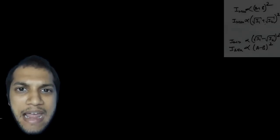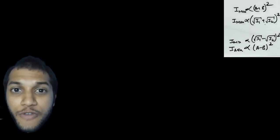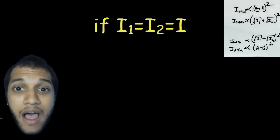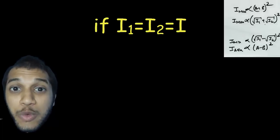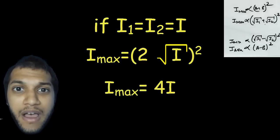There's something that we saw in the previous section that doesn't add up. What we saw is that if you have two sources of equal intensities, say I, and when they constructively interfere, they give you a resulting intensity which is 4 times I.